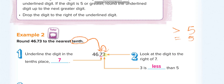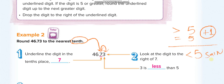If the next digit is greater than or equal to five, you add one to the underlined digit. If it is less than five, you keep the underlined digit the same. To summarize: underline the place value given in the question (tenths), then check the next number. If that number is greater than or equal to five, add one to the underlined digit. If it is less than five, keep the underlined digit the same.